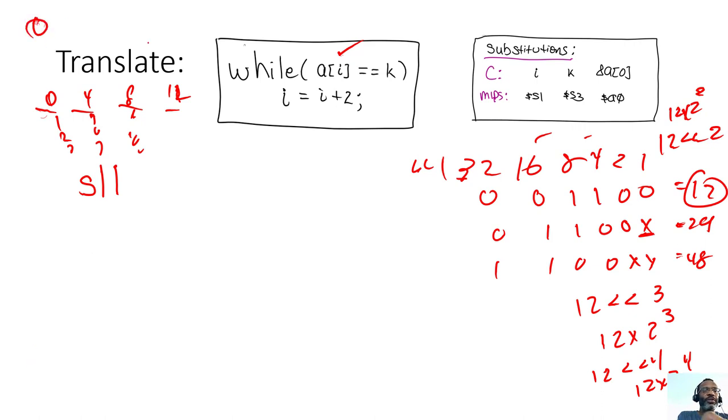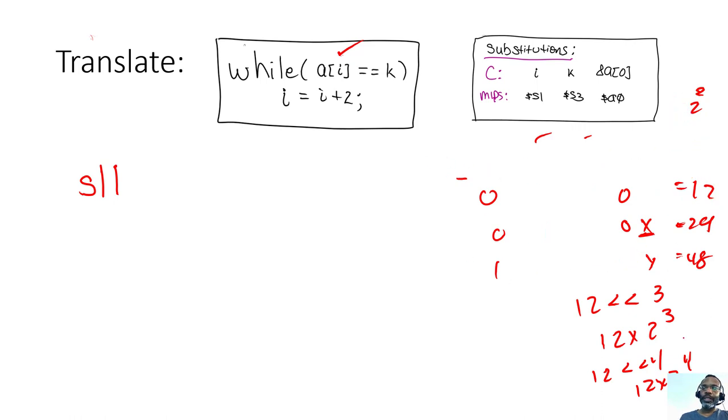So element sub 0 will be in a certain byte position offset from the beginning, element sub 1 will be 4 bytes away, element sub 2 will be 8 bytes away, element sub 3 will be 12 bytes away. So based on the index, if I multiply the index by 4, I know how far away that array element is from the beginning of the array. So that's why we have to multiply the index by 4.